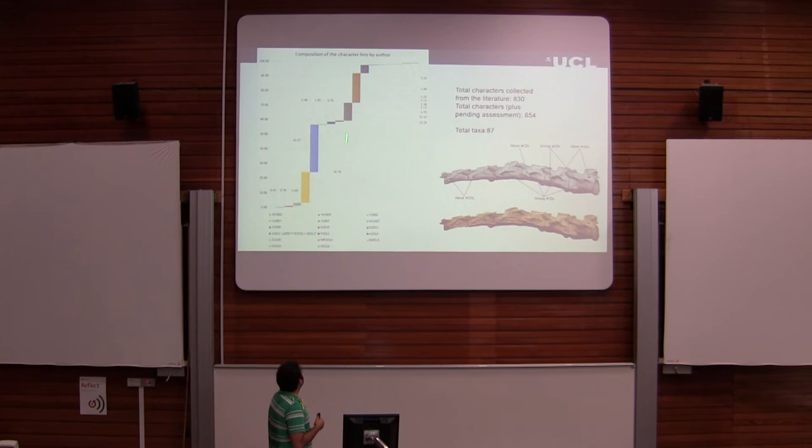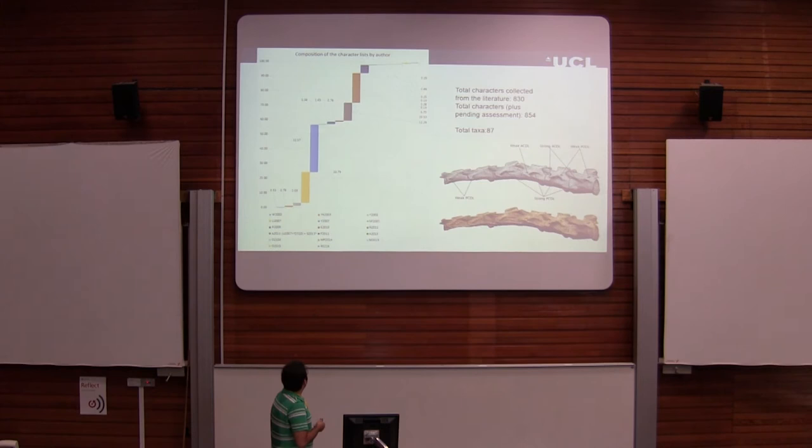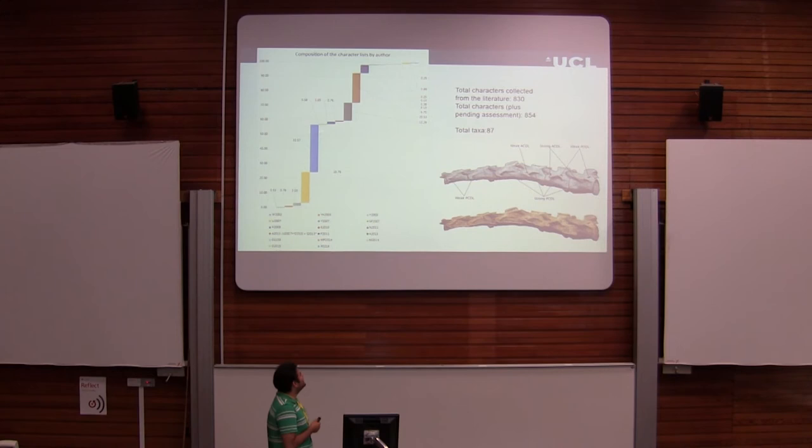What you see here is a composition of the character matrix. I did a literature review basically from 1850 all the way to now, and you can see the composition of characters per taxon. The abstract is already outdated — when I submitted it was around 700 characters, now it's 830, and I'm currently using 87 taxa.